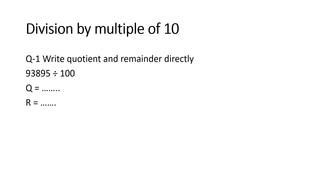Now it is practice time. Write the quotient and remainder directly — without doing long division. Remember this method. For example: 93,895 divided by 100 — find the quotient and remainder in your notebook.